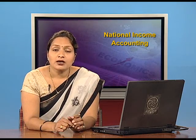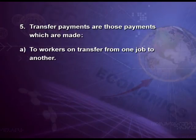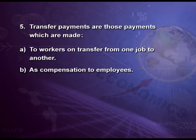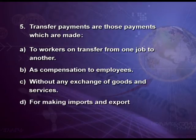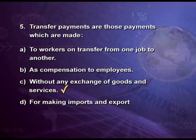Next question: transfer payments are those payments which are made — option 1, to workers on transfer from one job to another; option 2, paid to workers as compensation; option 3, made without any exchange of goods and services; option 4, made for imports and exports. The answer is option C: transfer payments are made without any exchange of goods and services, as transfer payments are unilateral payments.